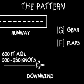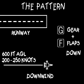Establish a heading on the downwind leg. Descend to 600 feet and reduce airspeed to gear speed. At gear speed, roughly 250 knots, drop the gear and flaps and contact the tower.